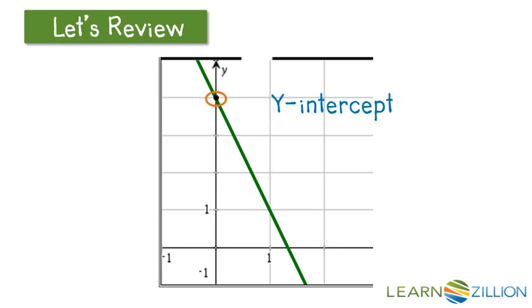The y-intercept is the value of y when x is 0. This can be interpreted as before anything has been done to the independent variable, and it's also your initial value, your starting value.